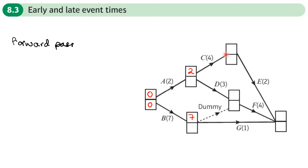For activity C, there are no other events we're waiting on, so the earliest time to finish C is six. Notice that this box represents two things: the earliest time A can finish and the earliest time C can start. That's why it's the early start and finish time — one box represents the end of one activity and the beginning of another, unless it's the source node or sink node.